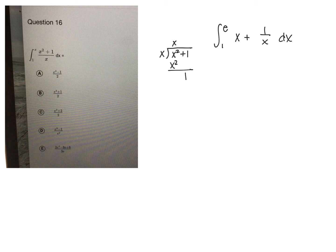Then I can take the antiderivative, so I'm just going to go up a degree, divide by that degree to get x squared over 2, plus the natural log of the absolute value of x, evaluated from 1 to e.